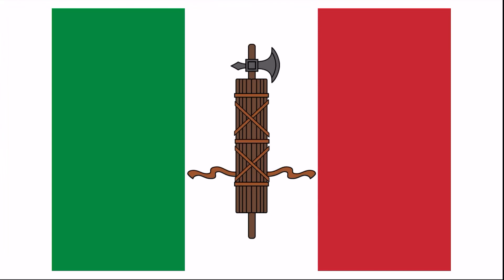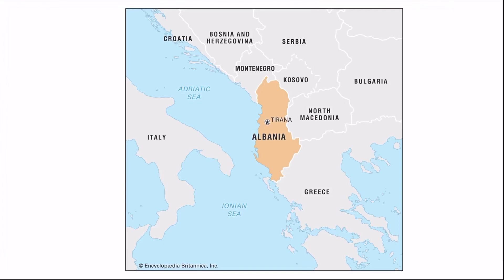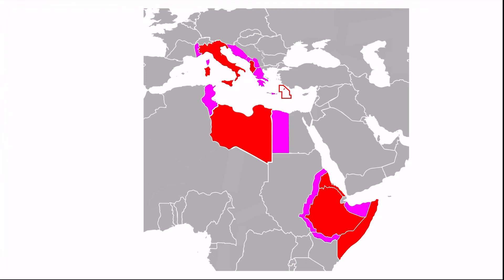The Fascist Party was quick to annex Albania. But this is basically where the rise of Italy ends, and we're about to move into their downfall with World War II.